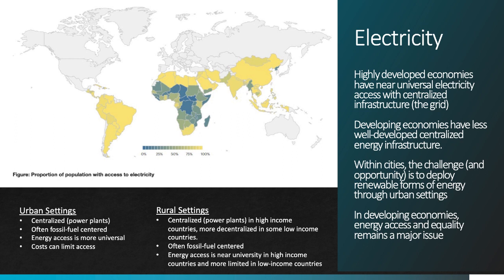If we were to break down the urbanization challenges and opportunities, we would say that in high-income settings, the issue — and also the opportunity — is to create more access to renewable energy via centralized electricity distribution systems. This is also true in low- and middle-income settings, but we also have to consider issues of energy access and energy equity, which vary a lot from rural to urban settings and vary a lot within urban locations.